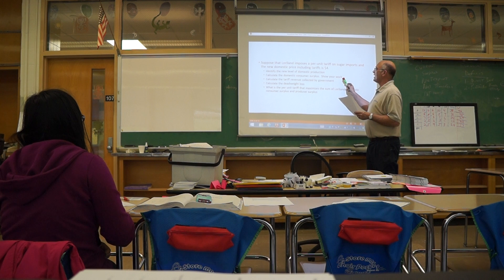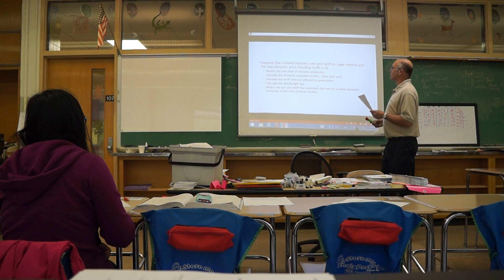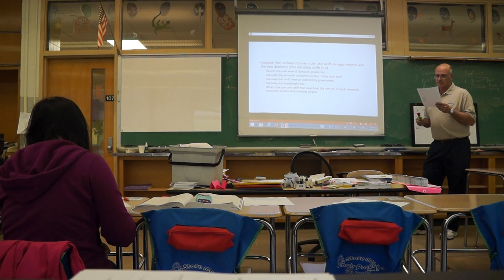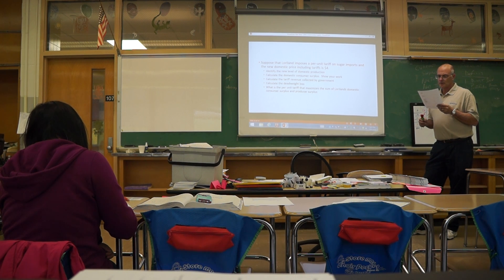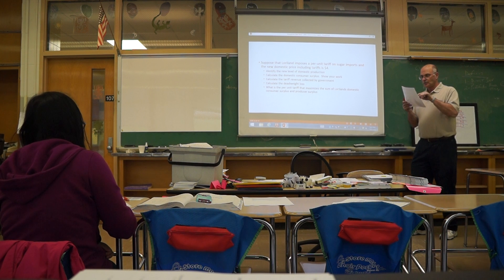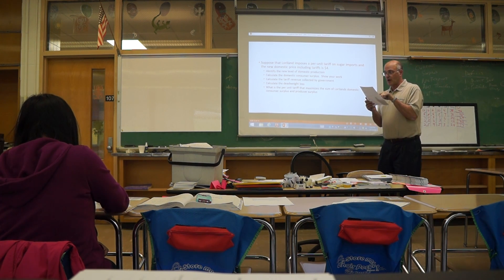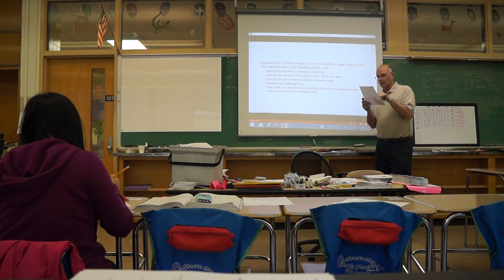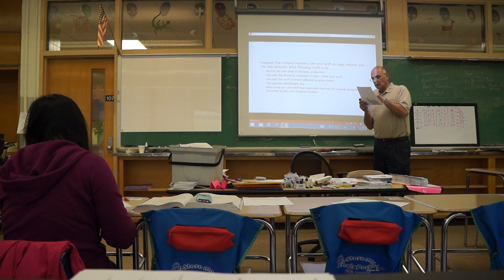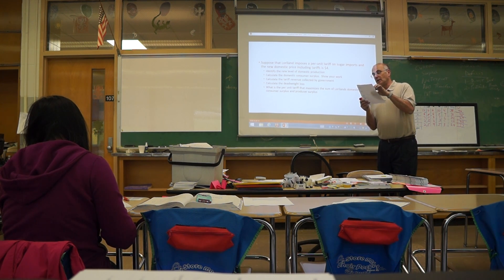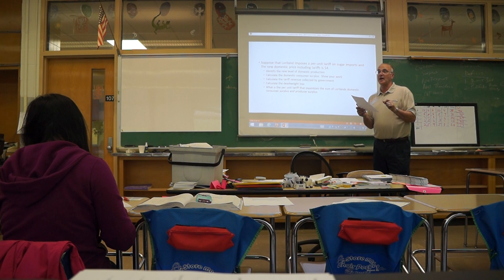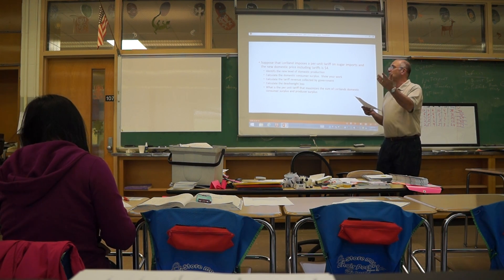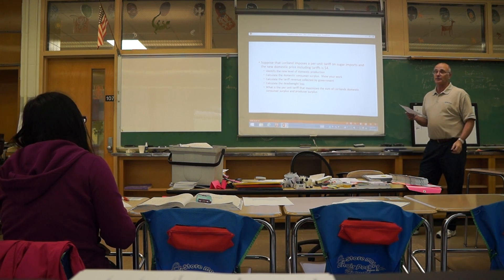Marika, could you calculate the domestic consumer surplus? You get 25. You have the triangle where four dollars goes to domestic demand. The height is five, the base is ten, five times ten is 50, divided by two is 25.